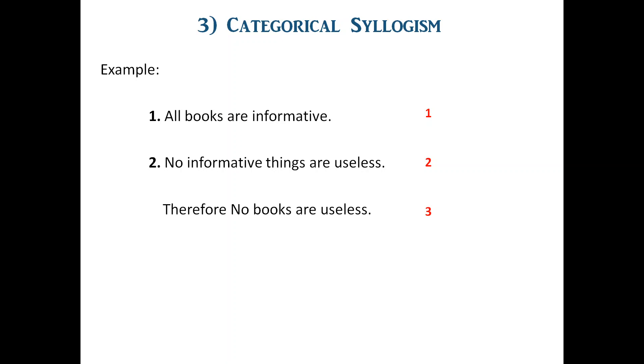These three propositions contain three terms, which we will study in detail in the next chapter. The subject term of the conclusion is 'books,' the predicate term is 'useless,' and the middle term — which appears in both premises — is 'informative.' So we have studied the three types of syllogisms, which are mediate inferences. Here we end this chapter, but we have to practice a lot to score good marks in logic. Thank you.